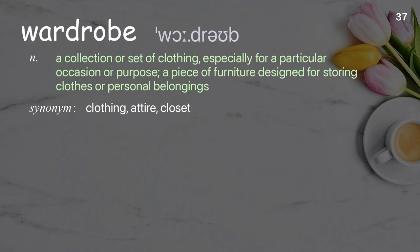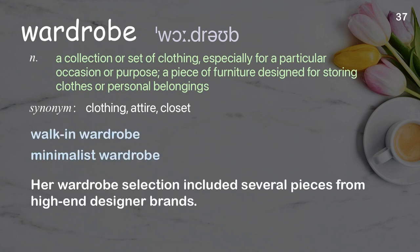Wardrobe: A collection or set of clothing, especially for a particular occasion or purpose; a piece of furniture designed for storing clothes or personal belongings. Examples: Walk-in wardrobe. Minimalist wardrobe. Her wardrobe selection included several pieces from high-end designer brands.